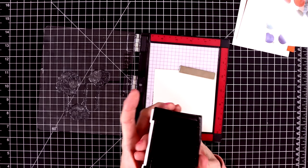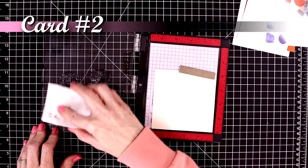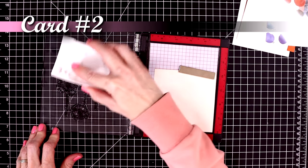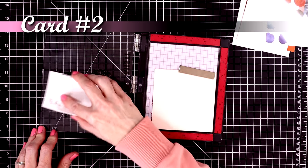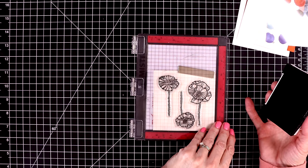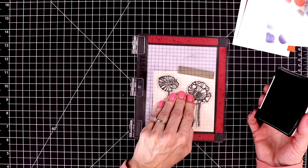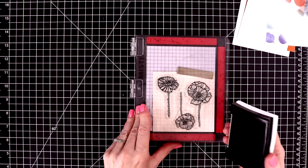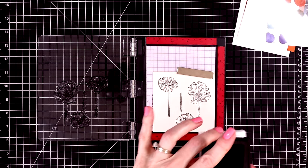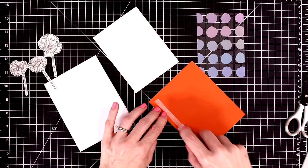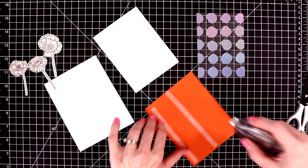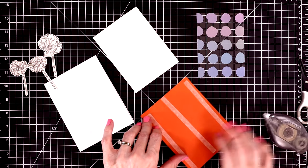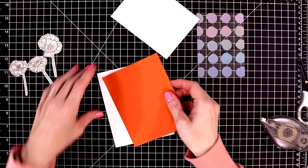On card number two, I'm going to stamp out a few of the single poppies onto a piece of Barely Peach cardstock. This is from my stash. It's from Spellbinders. And I'm not going to color these in this time. They're so gorgeous, you don't even need to color them in if you don't want to. For the color on this card, I'm going to use one of the beautiful acetate sheets.